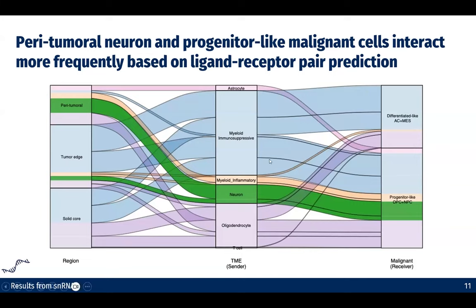On this graph, every single row is a ligand-receptor pair. I want to focus your attention on the green part here, which is suggesting that neurons are frequently interacting with the progenitor-like population, and specifically more enriched towards the peritumoral region.